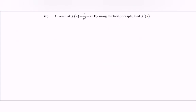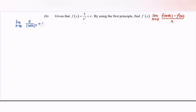Now for part b: given the function f(x) equals 5 over x squared plus x, by using the first principle we find f'(x). This is the limit as h approaches 0 of f(x+h) minus f(x) over h. Substituting: the limit as h approaches 0 of 5 over (x+h) squared plus (x+h), minus 5 over x squared plus x, all over h.